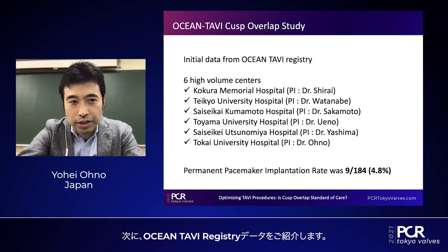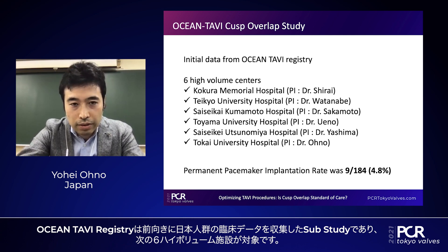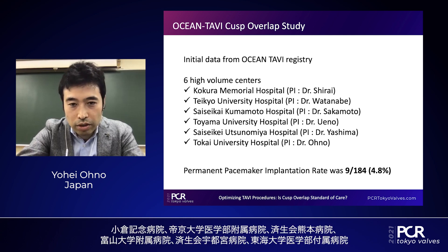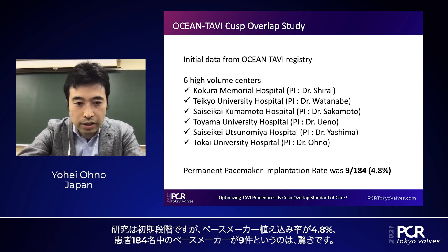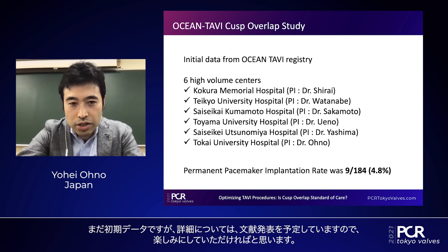This slide shows initial data from the Ocean Tybee Registry, a prospectively collected dataset from a Japanese cohort. This sub-study uses the cusp overlap technique across six high-volume centers in Japan: Kokoro Memorial Hospital, Teikyo University Hospital, Saisei Kumamoto Hospital, Toyama University Hospital, Saisei Kusunamiya Hospital, and Toka University Hospital. Surprisingly, the pacemaker implantation rate was 4.8 percent — nine pacemaker implantations out of 184 patients. These are still initial data and the manuscript is being prepared.